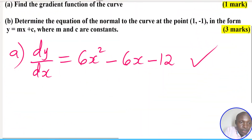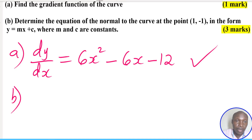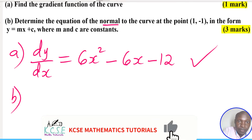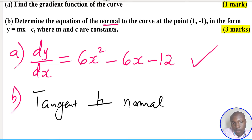For part b, we need to determine the equation of the normal to the curve at the point (1, -1) in the form y = mx + c. An important thing to know here is that the tangent is always perpendicular to the normal. So to get the equation of the normal, we first need to get the gradient of the tangent.